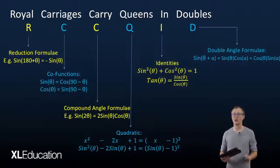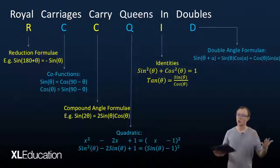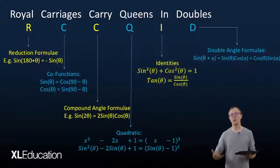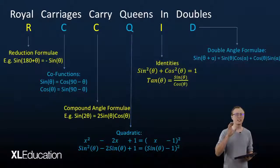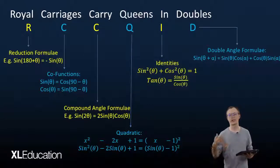Right, so the nursery rhyme is royal carriages carry queens in doubles. The tools are reduction formulae, your co-functions, your compound angle formulae, you can look for quadratics, there's identities, or there's double angle formulae. Now those six things are the tools that you can use to simplify trig expressions.